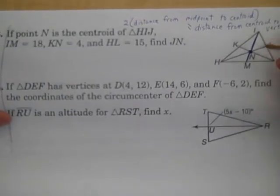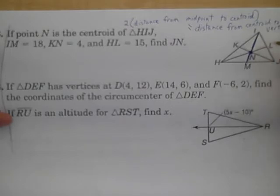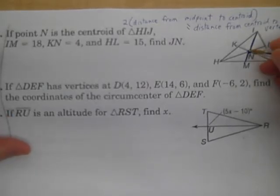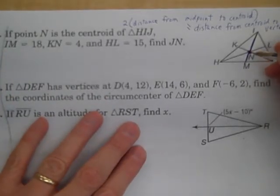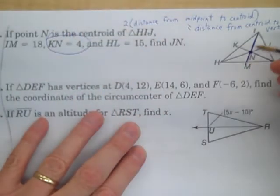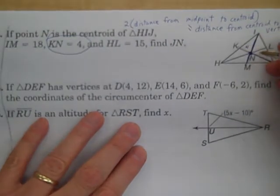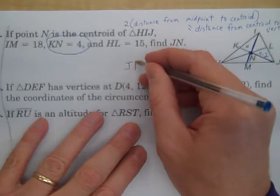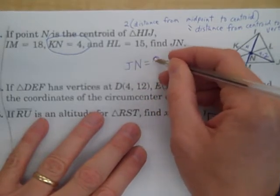Now, we're asked to find JN, which is vertex to centroid. In this, the only thing we really need is KN is 4. If that's 4, this is 4 times 2. JN is twice that. So, JN is 8.